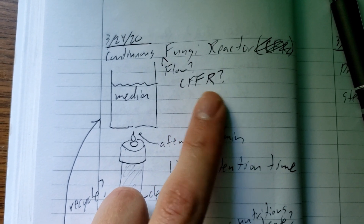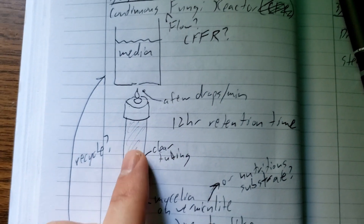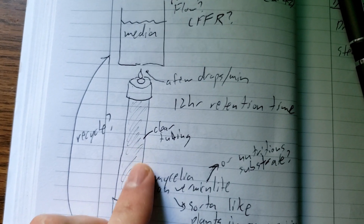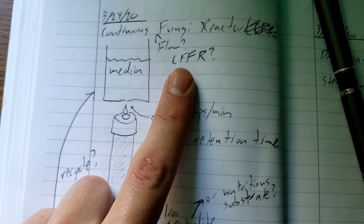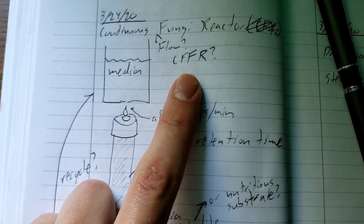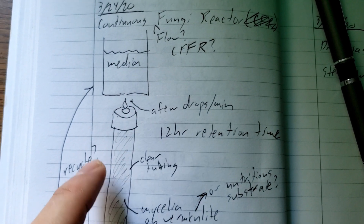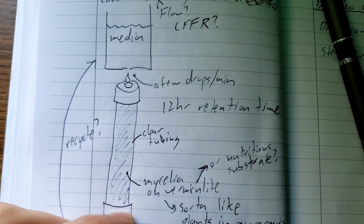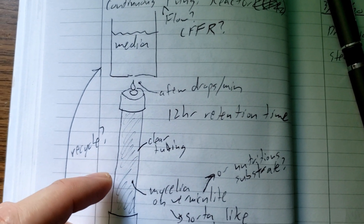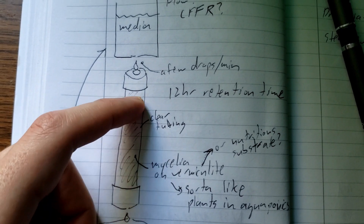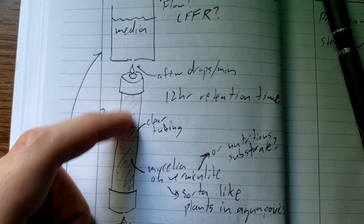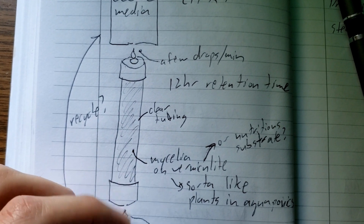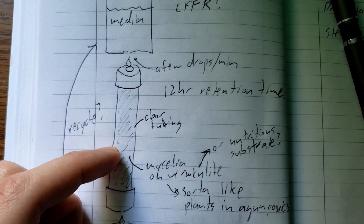I'm going to call it the CFFR, because you've got to have a good acronym — that's the most important part of any project. The idea is to combine the concept of a continuous flow reactor, which essentially pumps a fluid, either gas or liquid, through a column of material.